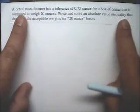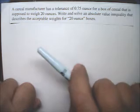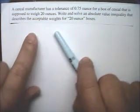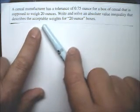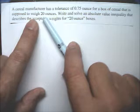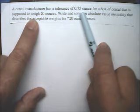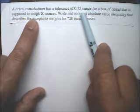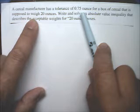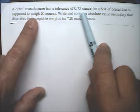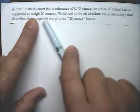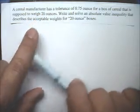And Example 4 has to do with tolerance, and it describes the weight of a cereal box is supposed to weigh 20 ounces, and there's a tolerance of .75 ounces. So that means it could be 20.75 would be the highest it could be, and 19.25 would be the lowest it could be. That's what tolerance means.